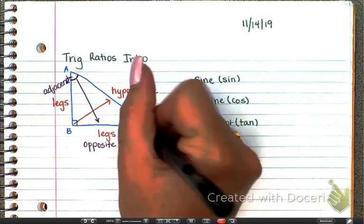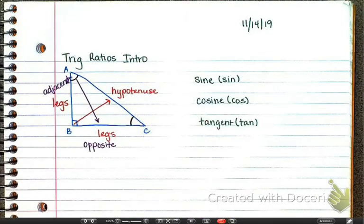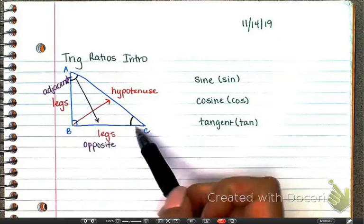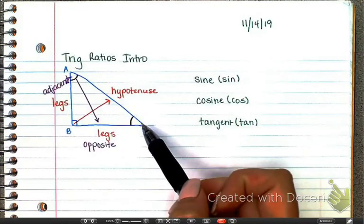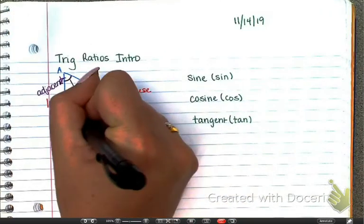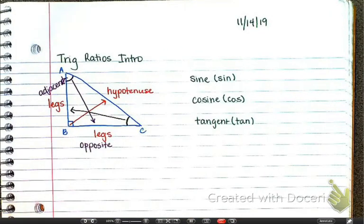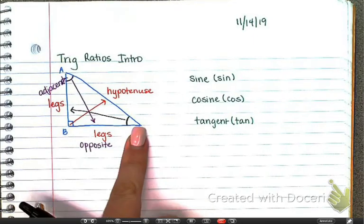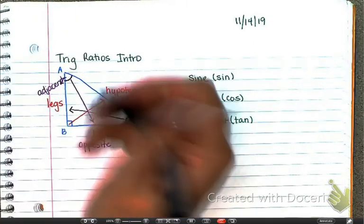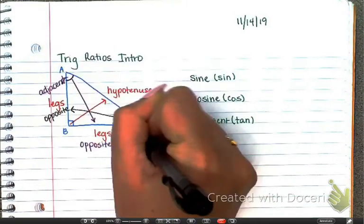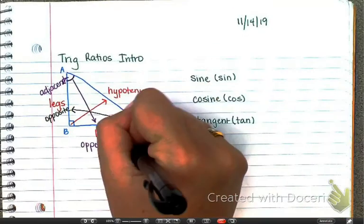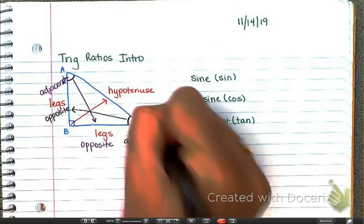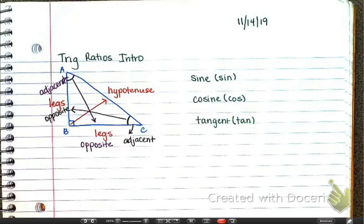But what if my reference angle was angle C? The side across from it would still be called the opposite, and the side next to it would be the adjacent. So the opposite and adjacent sides are determined based off your reference angle.